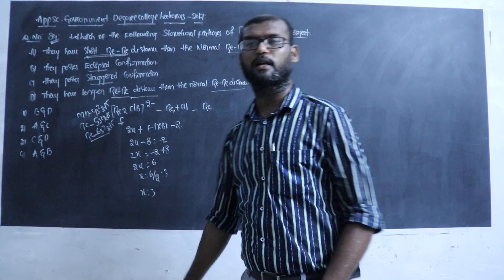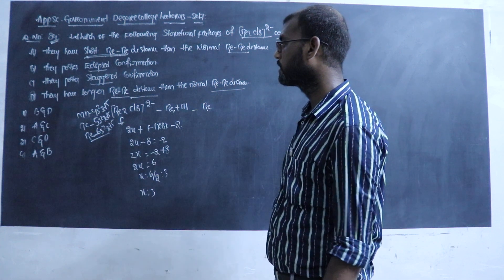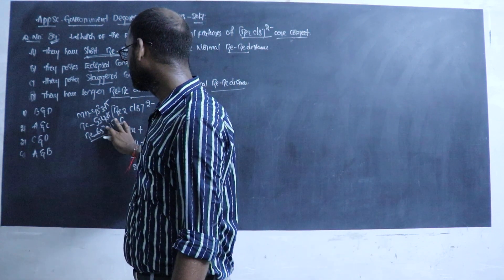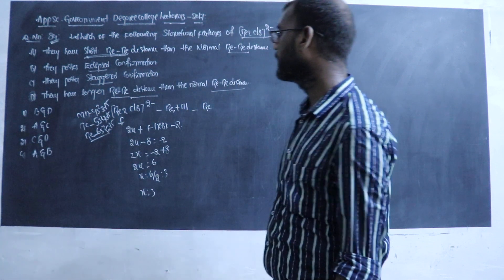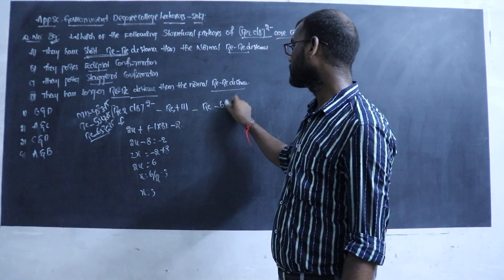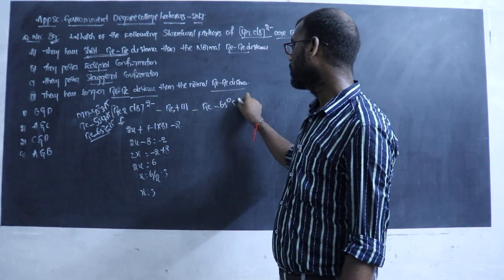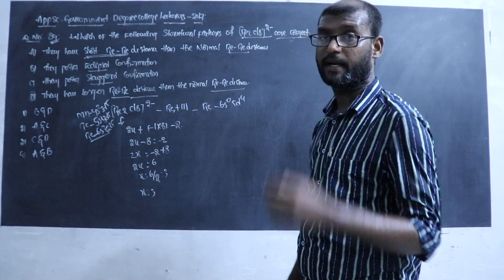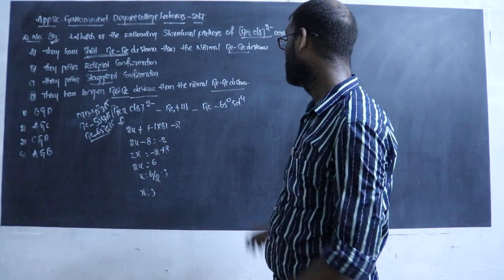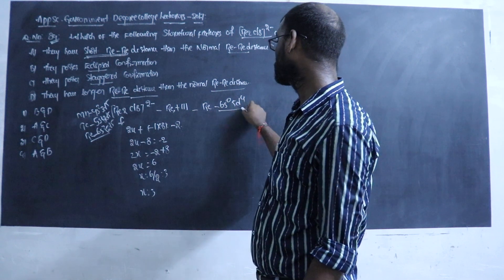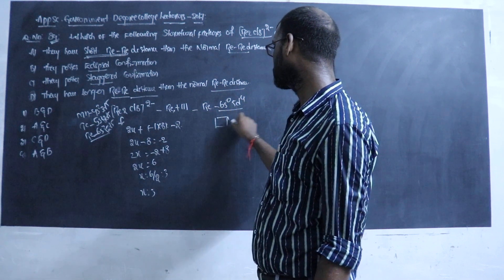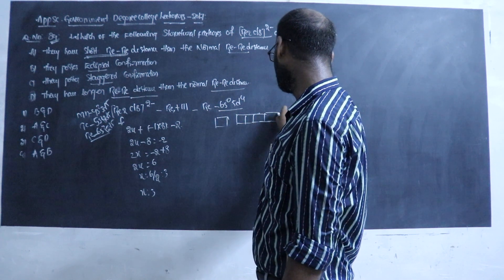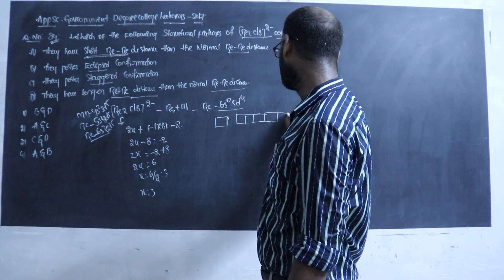So we call 6s and 5d, 4f orbitals. The configuration involves 4f, 5d, 6s orbitals — 5f, 5d, 6s, 0 — and then 4f, then 5f.